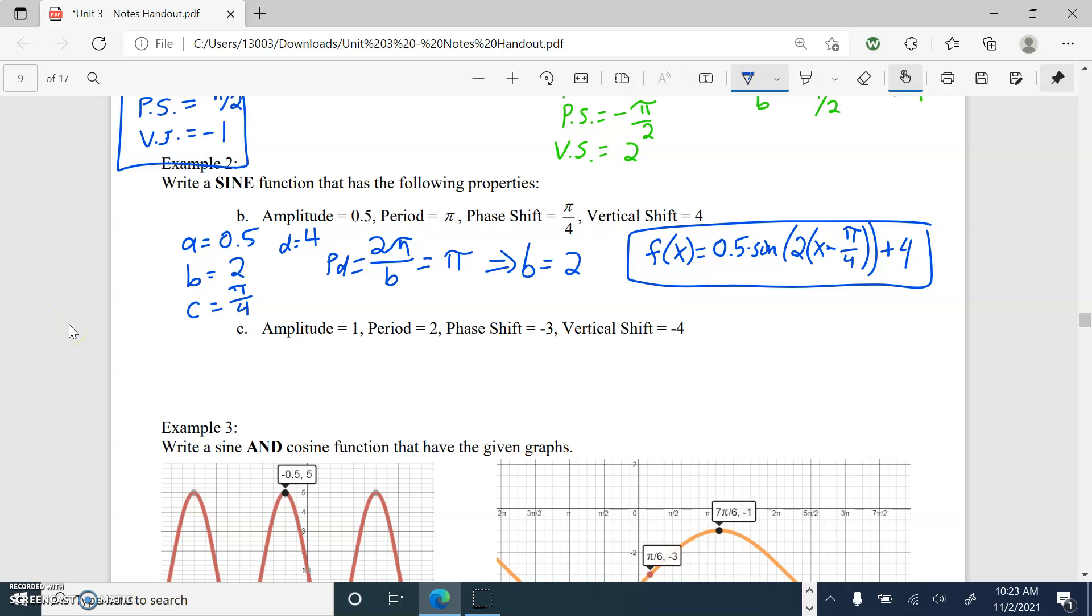Let's try c. So again, a. Wow. Terrible a. Try that again. A, there we go. A is 1. See, this way I've got to make sure I've got room. Our period is 2. Period equals 2π over b. If you flip places of b and 2, you get b is 2π over 2. Thus giving us b is equal to π.